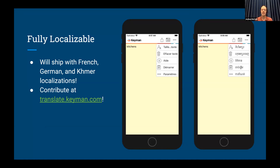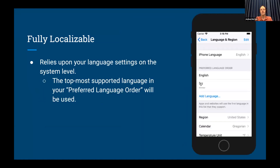You can contribute at translate.keyman.com to help see your language supported as well. To enable this, it currently relies on your system language settings within iOS. Go into the Settings app, under General > Language & Region. It then looks at your preferred language order. iPhones are only localized at the system level in a selected number of languages, but they do allow for some additional languages. For example, Khmer does not have iPhone UI strings available — it has not been localized for Khmer — but if an app is localizing Khmer, they do allow that. So if I were to move Khmer above English, I would get the screenshot on the previous slide where Khmer was used within the app. The topmost supported language in your preferred language order is what will be used for all the app text strings.